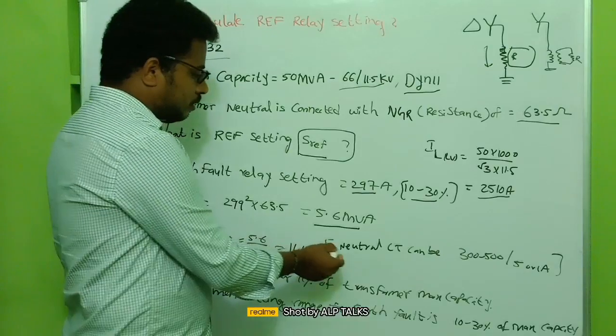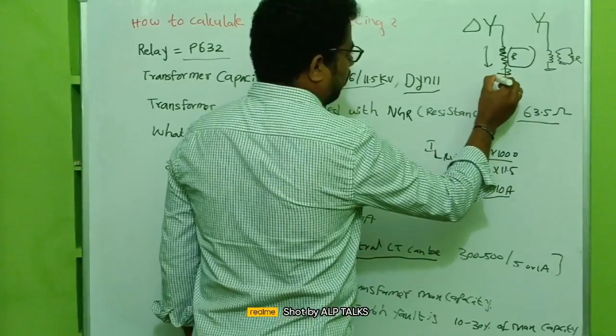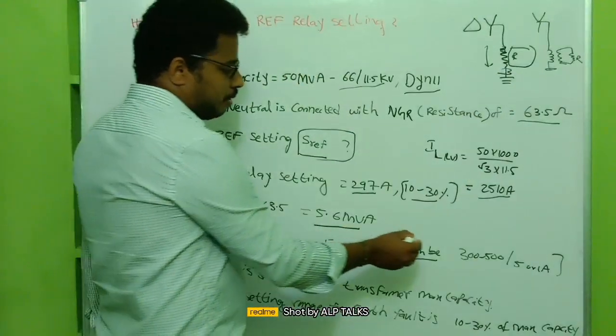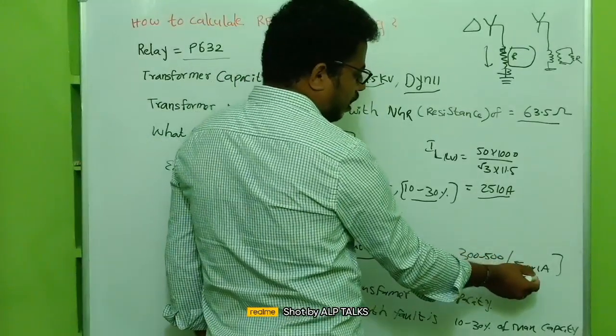And the neutral CT, whatever it is there, the CT for transformer we are going to mount it here. That can be 300 by 5 ampere and it can be 300 to 500 by 5 or 1 amp, it can be on secondary.